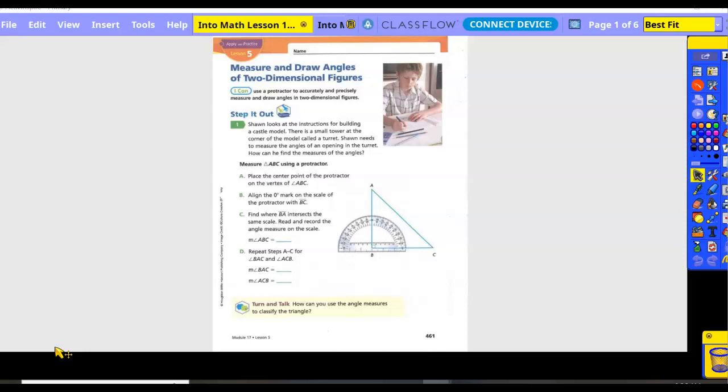Place the center point of the protractor on the vertex of angle ABC. So I'm going to take my protractor and line it up just like they showed me. Our protractor, the center point is on the very bottom. Then you're going to align the bottom with BC, and then find where BA comes across. What degree? 90 degrees.